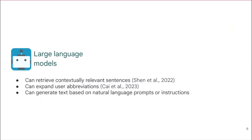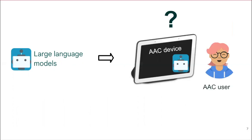Recent advances in large neural language models have created new opportunities for improving the usability and efficiency of AAC devices. These models can generate text that is contextually relevant and grammatically correct, potentially enabling AAC users to generate conversational phrases with minimal effort. While large language models show great promise to improve the speaking rate for AAC users, we do not yet know what it is like for AAC users to actually use these models in the context of real-time communication support.